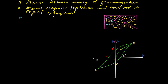Within a domain, all the dipoles are aligned in one particular direction. The ferromagnetic material has many different domains, and within each individual domain there is a rough value in the order of 10 to the power 11 atoms. An electron microscope can distinguish between these domains. Until we apply an external magnetic field, these domains are in a random orientation.